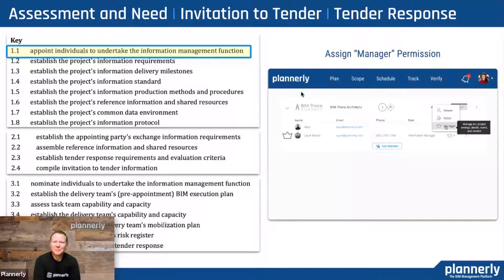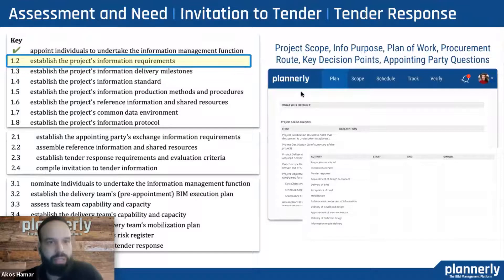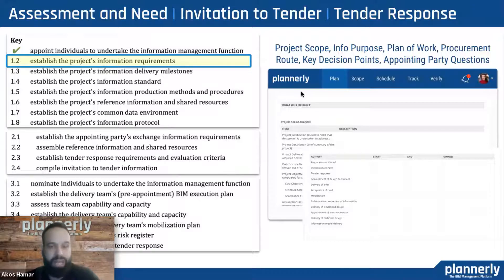The first part of the process is to appoint individuals to undertake the information management function. What this means is we need a certain person who really understands the processes and the requirements — the needs of a company with a digital head-on as a requester. Using the ISO terms, an appointer really has to translate and oversee the management and creation of these information pieces. The next step is to establish the project information requirements — what is the purpose of creating this information?